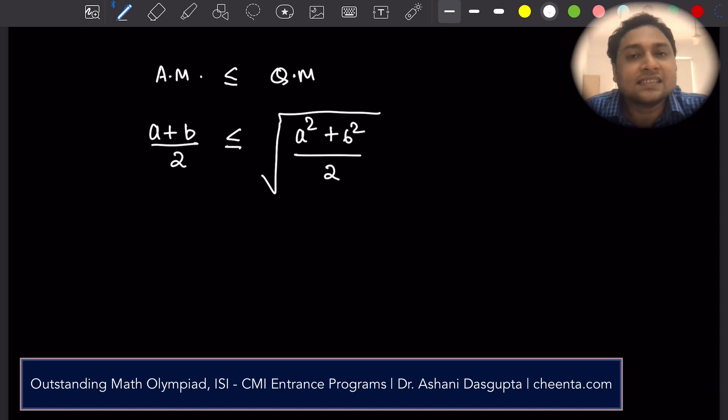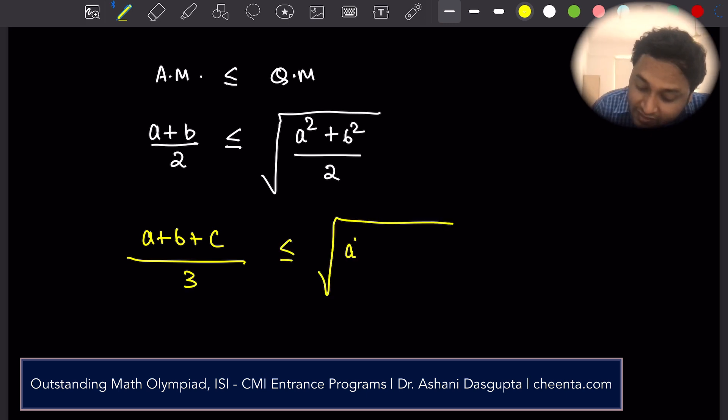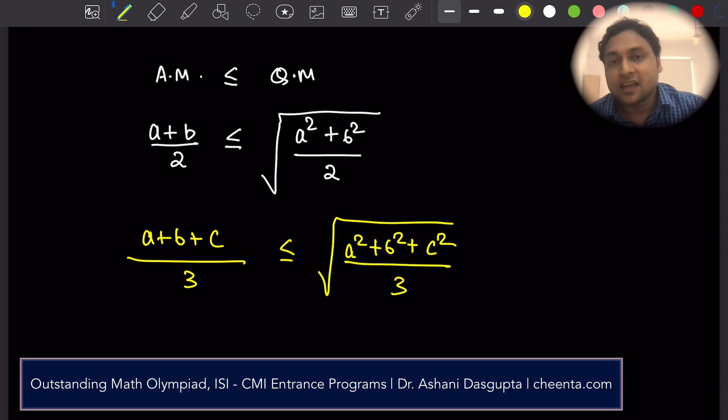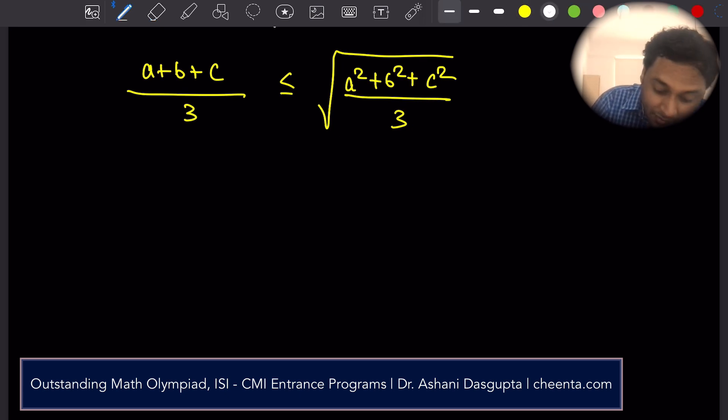Arithmetic mean is always less than or equal to the quadratic mean. This is an inequality from algebra. It's widely used. Just to make sure that we understand, let's try the three variable case. It is A plus B plus C by 3, the arithmetic mean of three numbers, is less than or equal to square root of A square plus B square plus C square by 3. This is for three numbers A, B and C. But why is this true?